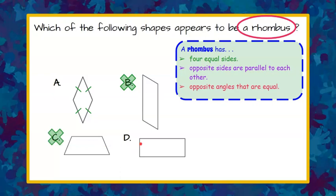Choice D appears to be a rectangle and clearly not four equal sides. So we can rule that out. It looks to me just by considering the first property of a rhombus that our answer is A.